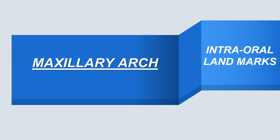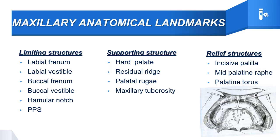Let us now start with the maxillary edentulous arch landmarks. They are categorized as limiting structures, supporting structures, and relieving structures. Limiting structures include the labial frenum, labial vestibule, buccal frenum, buccal vestibule, hamular notch, and posterior palatal seal. Supporting structures include the hard palate, residual ridge, palatal rugae area, and maxillary tuberosity. Relieving structures are the incisive papilla, mid-palatal raphe, and palatine torus.